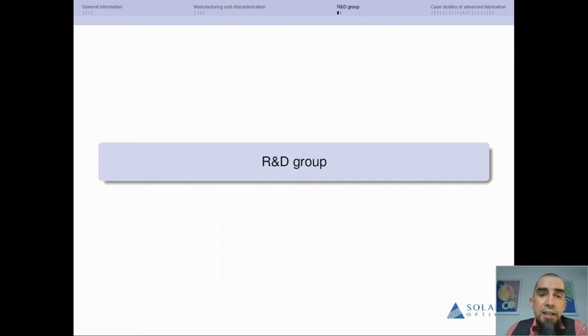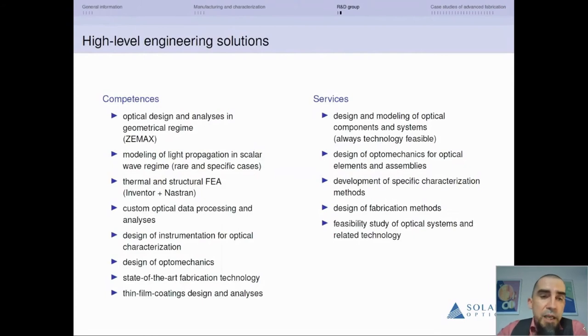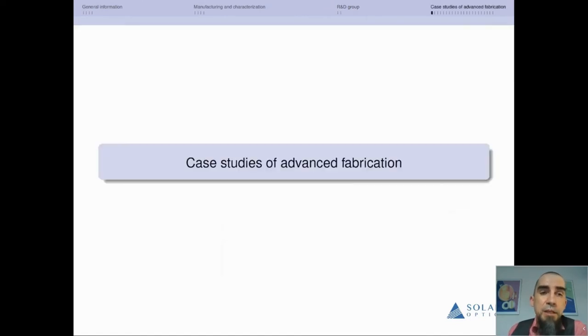Apart from the technological side with measurement fabrication and thin film coating, we have our R&D group. The group always cooperates with technologists, therefore our optical designs are mature and always technologically feasible. We use Zemax in geometrical wave regime modeling. We use Inventor and Nastran to model and design mechanical elements for our optical elements and assemblies. We do technological and feasibility studies, and can advise our clients and propose modifications of their designs to make them technologically feasible.